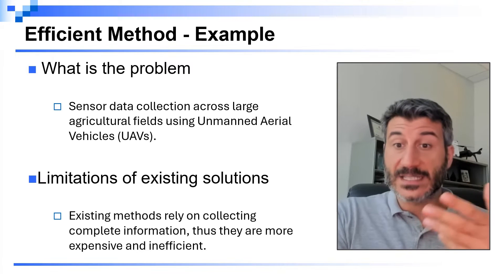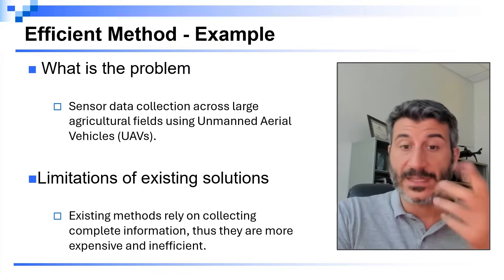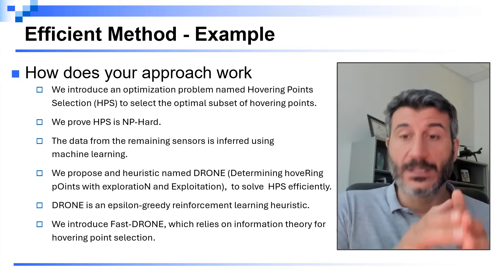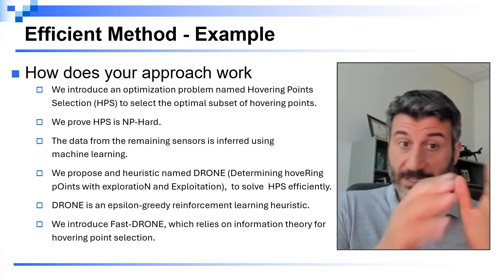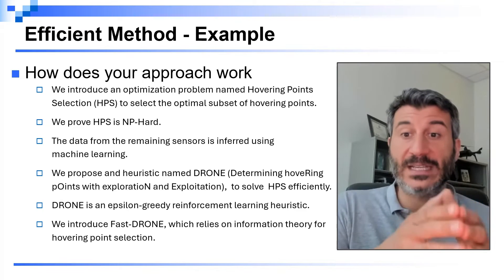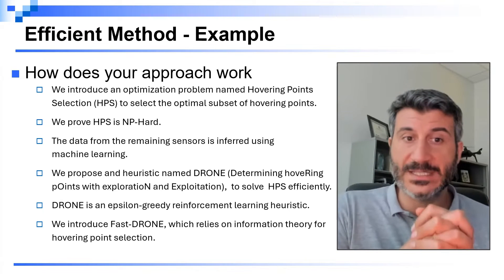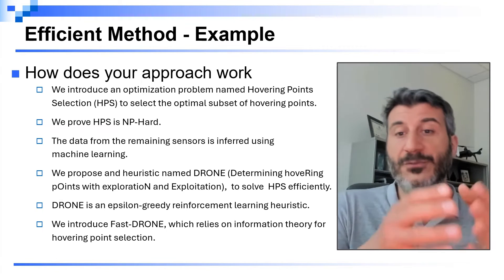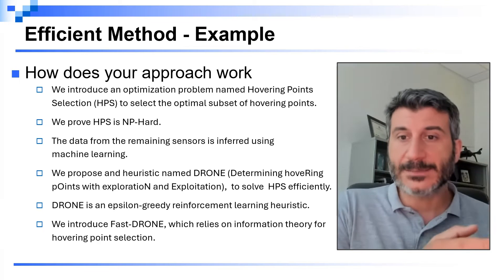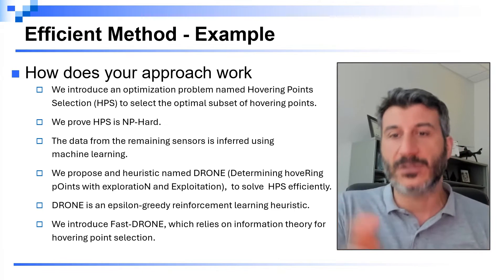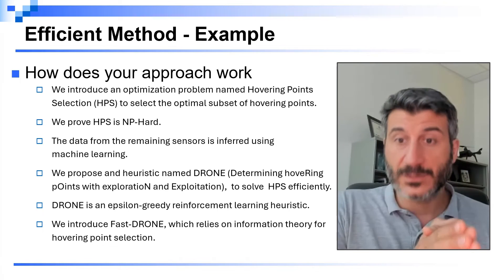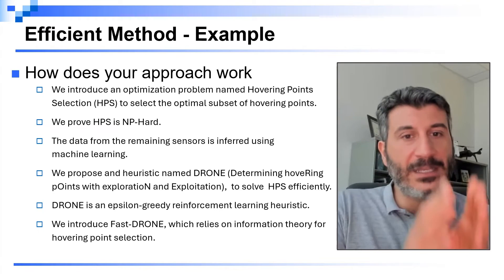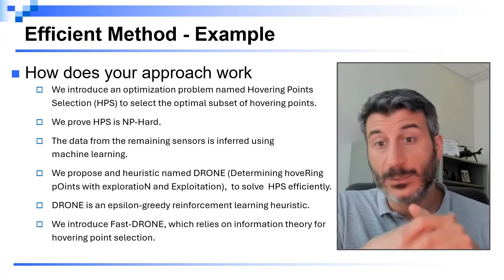Second, what are the limitations of existing solutions? Existing methods rely on collecting complete information, thus they are more expensive and inefficient. Then, you should describe how your approach works. In this case, for example, we wrote that we introduce an optimization problem in order to select a subset of the sensors. The name of this problem is hovering point selection. We proved that this problem is NP-hard, and given the sensors that are selected, we use machine learning in order to infer the readings of the sensors that are not selected. Since the problem is NP-hard, we propose a heuristic that is called drone, and it's an epsilon-greedy heuristic. And we improve drone using another approach based on information theory that we called fast drone. If you know the paper, it really shouldn't take too much time to write these few short sentences about your approach.